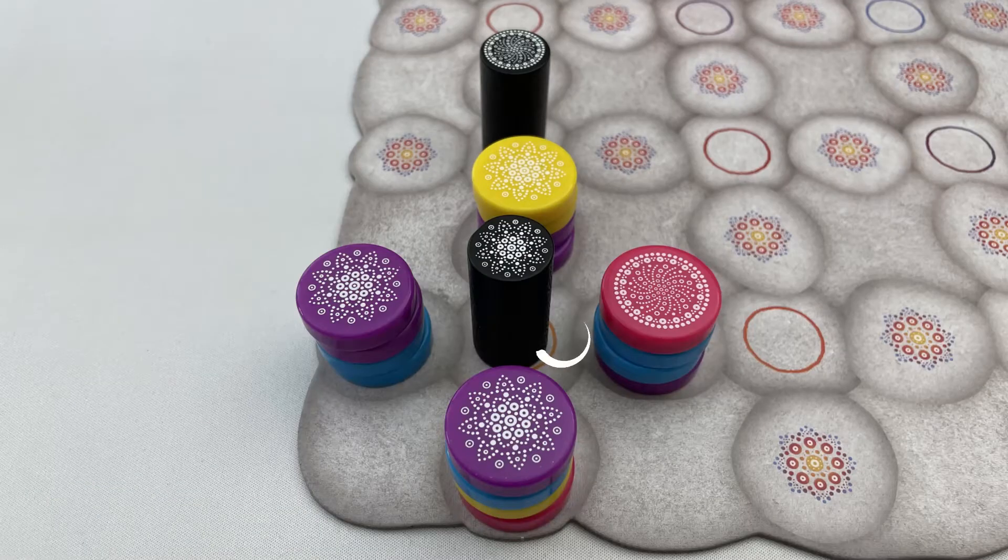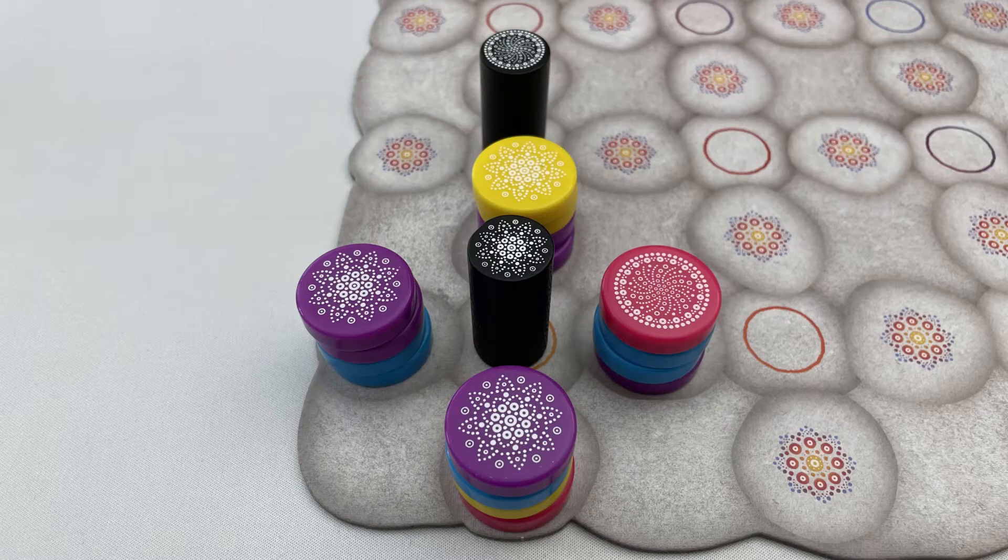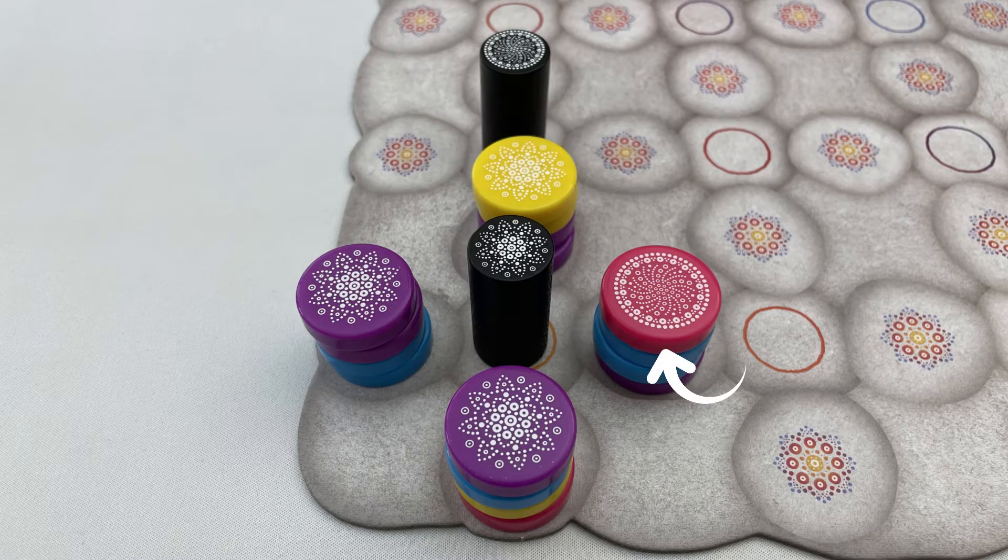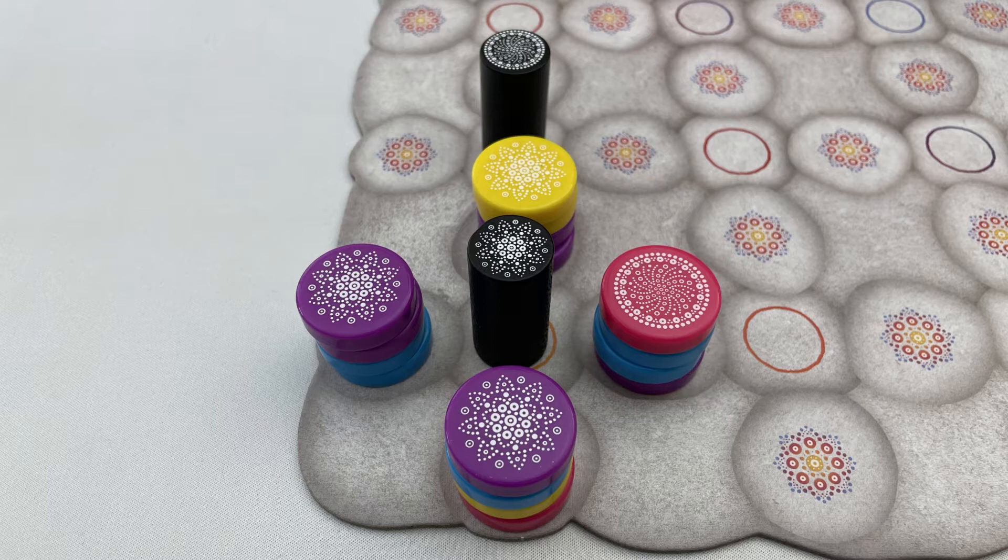For example, they moved an artist to this space here. From this position, they can take both the purple stones as they match the pattern on the artist. They can't take the red stone because the pattern does not match, and they can't take the yellow stone because even though the pattern does match, it is adjacent to another artist.